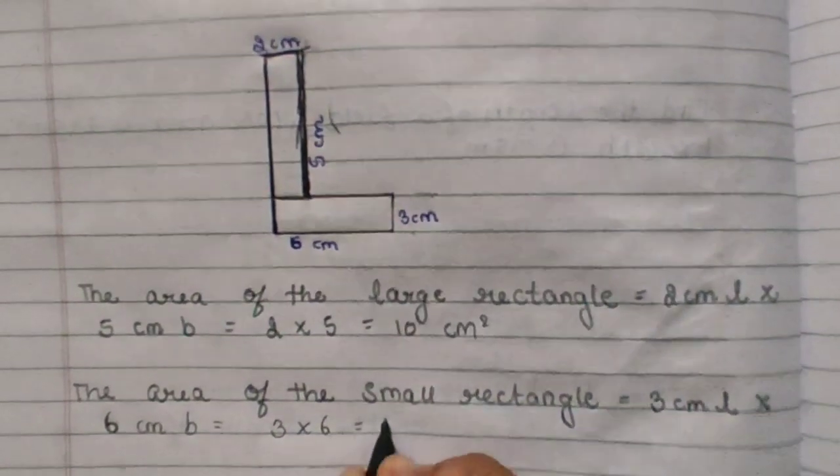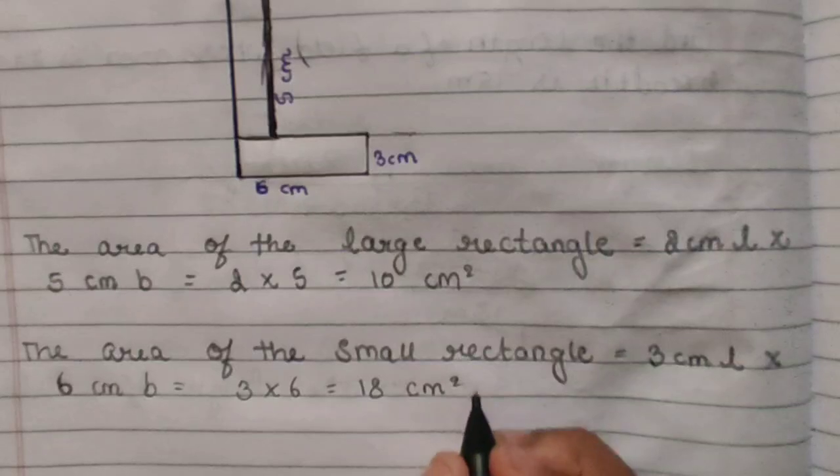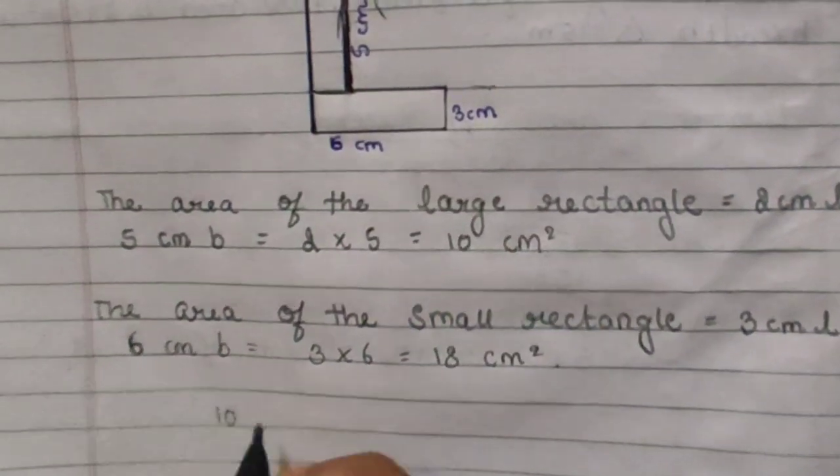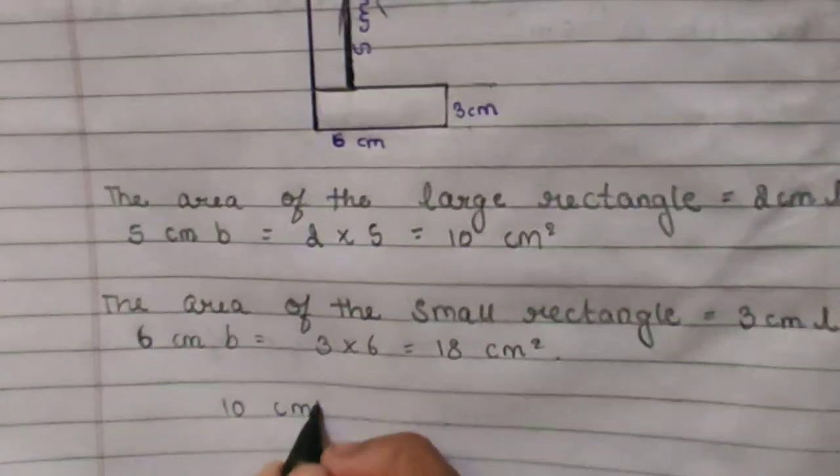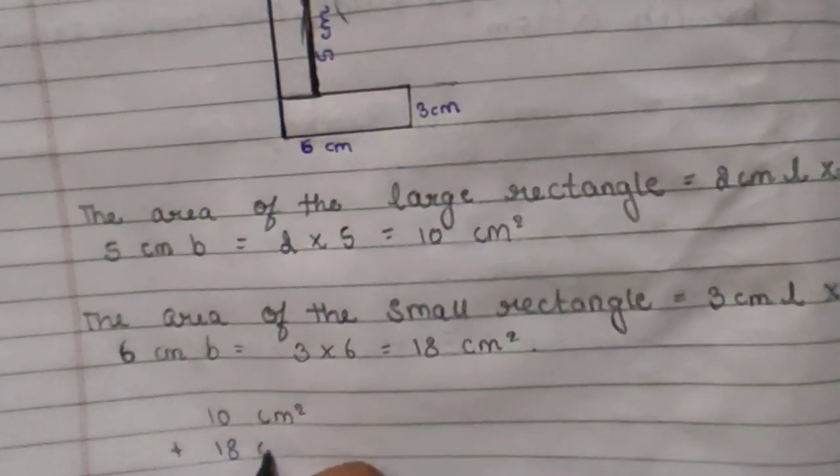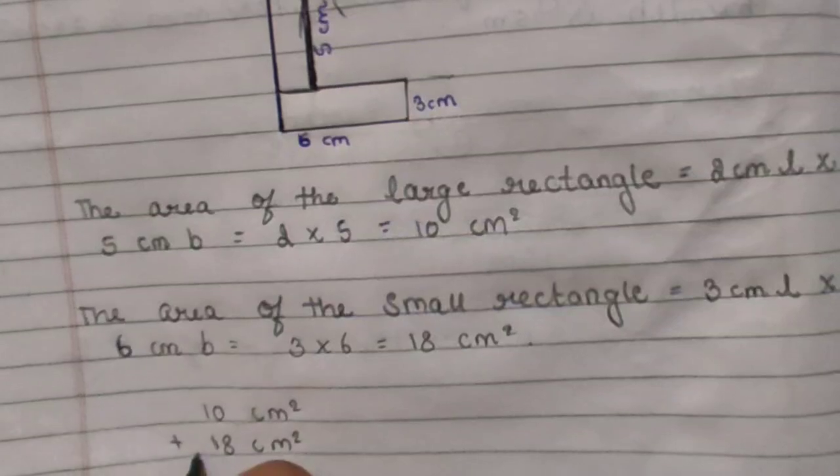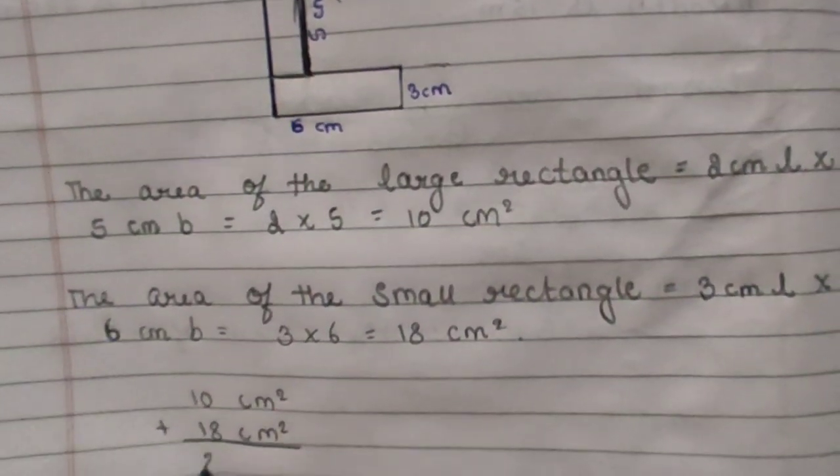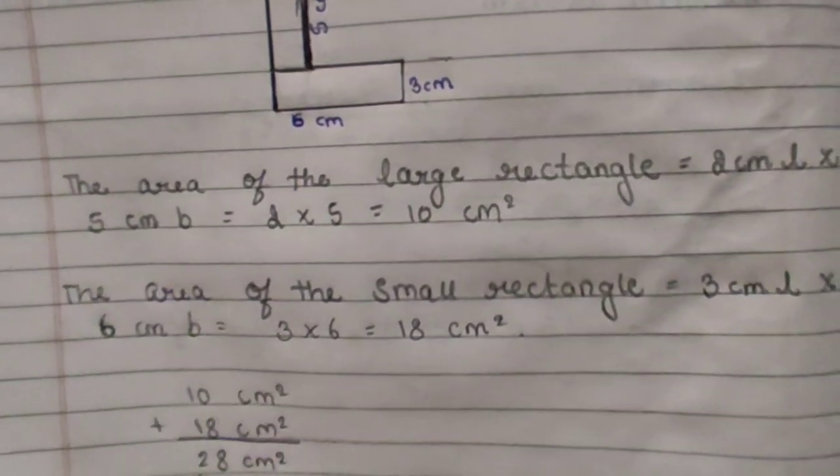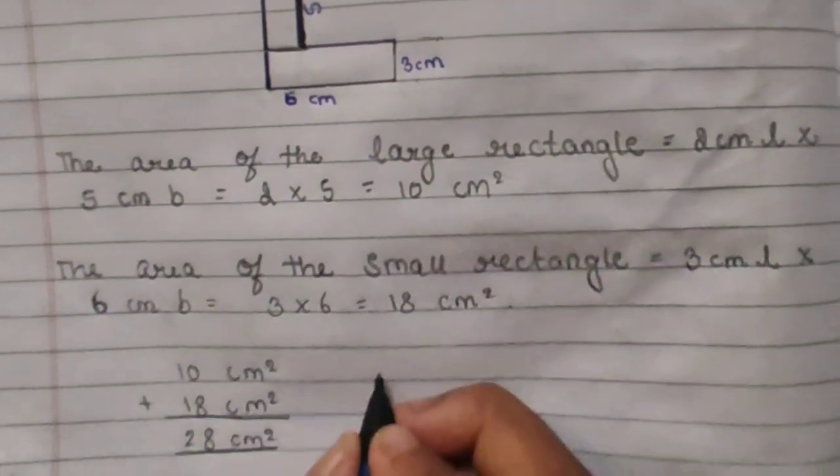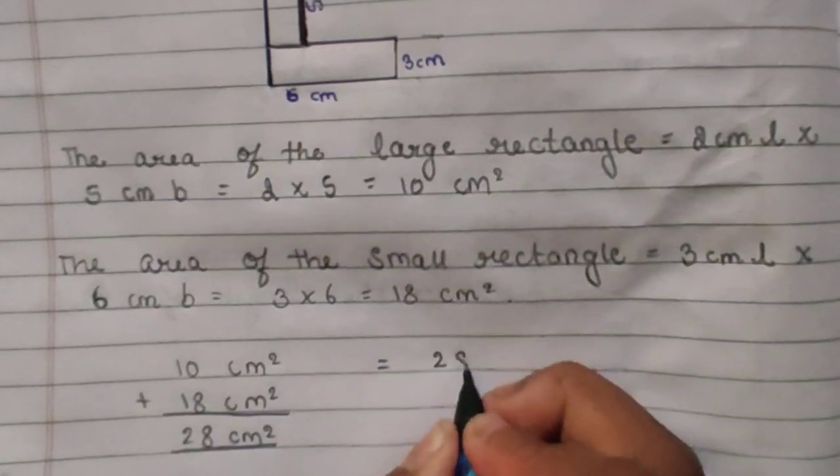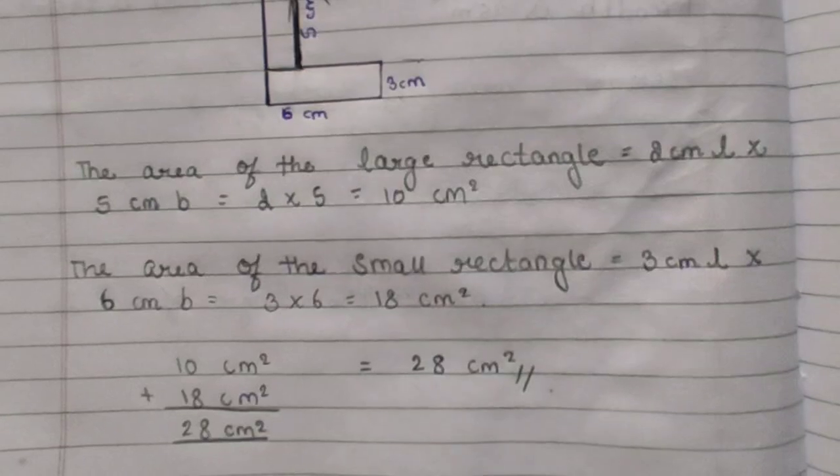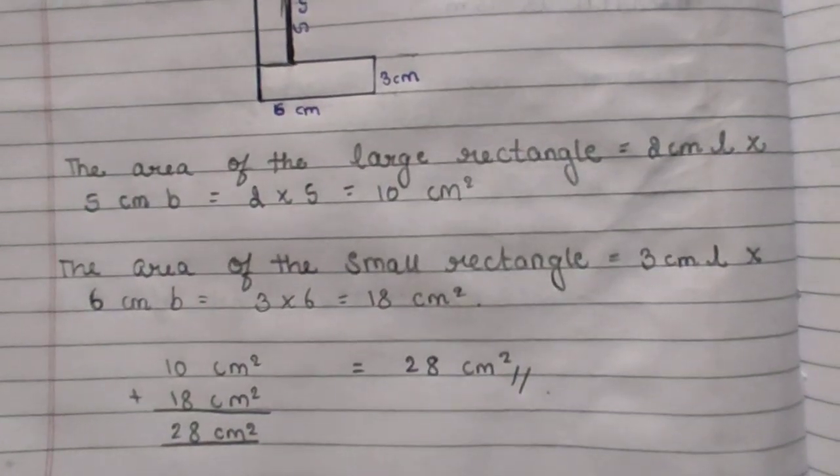Now we have to add these two: 10 square cm plus 18 square cm. 10 plus 18 is 28 square cm. So the answer is 28 square cm. The total area of the figure is 28 square cm.